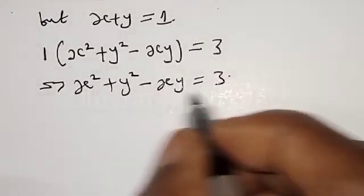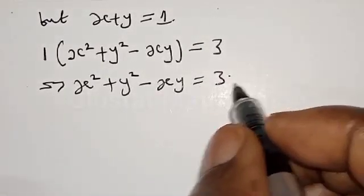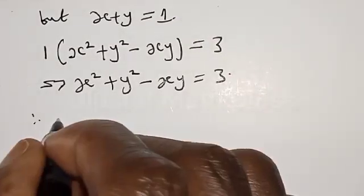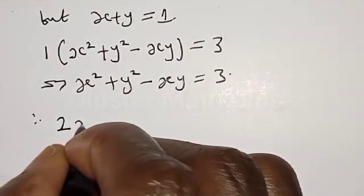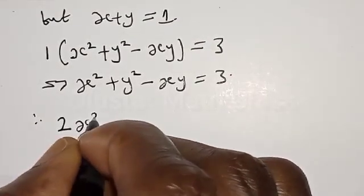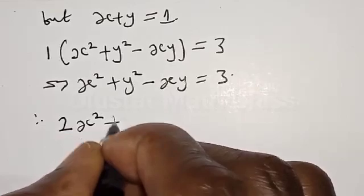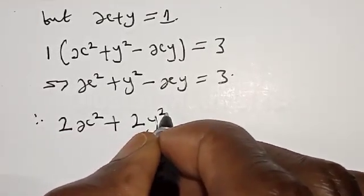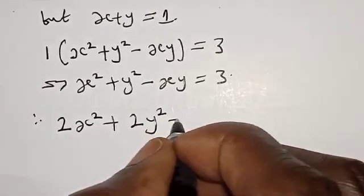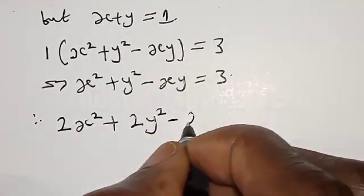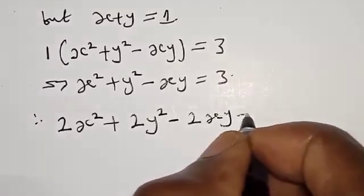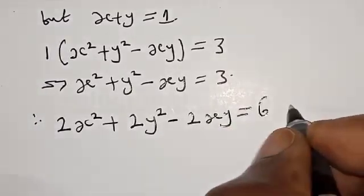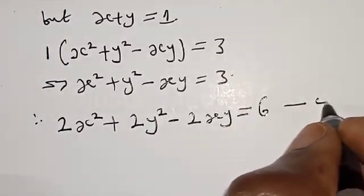Now let's multiply all through by 2. We have 2s squared plus 2y squared minus 2sy equal to 6. Let's call this equation 4.